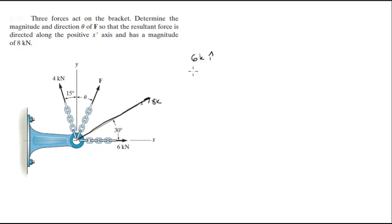The second force is negative 4k sine of 15 degrees in the i direction plus 4k cosine of 15 degrees in the j direction. And the third one, which is f, is going to be, let's call it x and y, which is what we're trying to find.